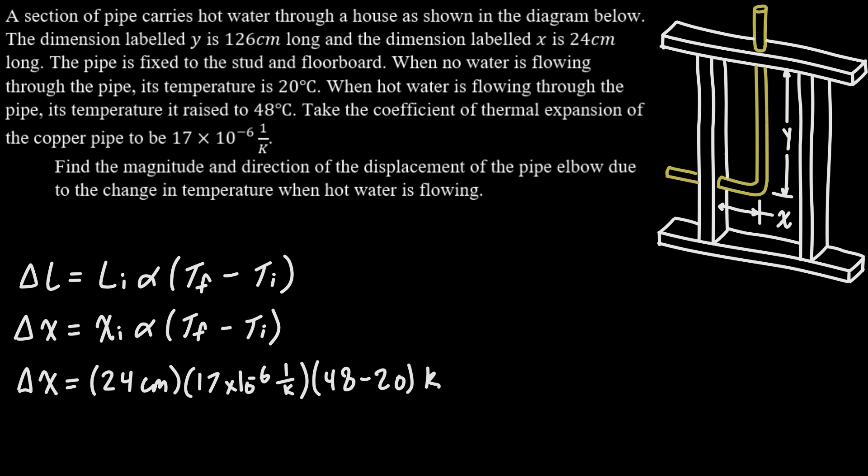So if we plug in our numbers for that we'll get the initial length as 24 centimeters, alpha as 17 × 10^-6 per Kelvin, and our change in temperature here, we're starting at 20 degrees and we're ending at 48 so that'll be 48 minus 20. And if we plug that all in we get that the change in x is 0.01142 centimeters. So it really is a tiny number here that we get for that.